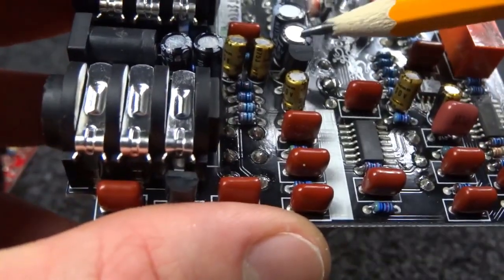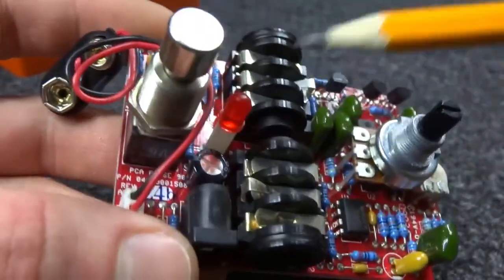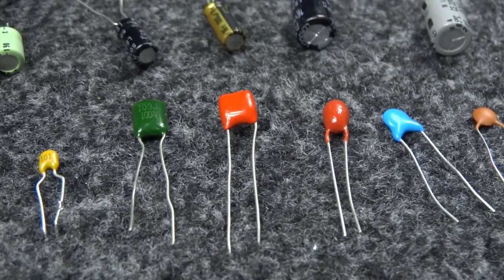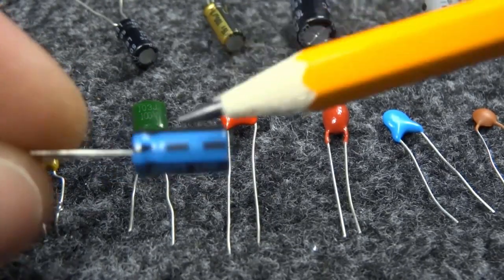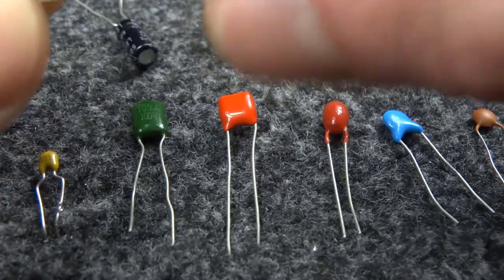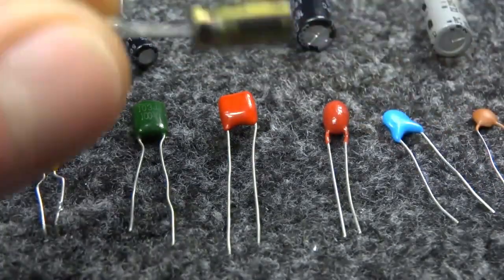Those round barrels are also capacitors, but they are a bit different. They are polarized, so they have positive and negative sides. We call them electrolytic capacitors. Here you can see some not mounted capacitors. As you see, electrolytic capacitors have indicated negative side and also legs are shorter this side.